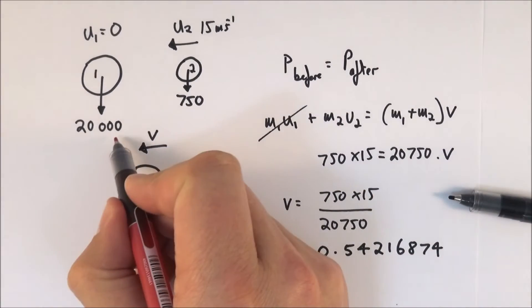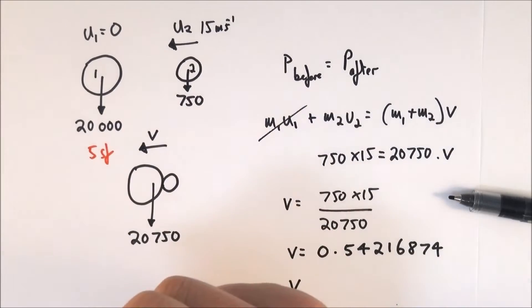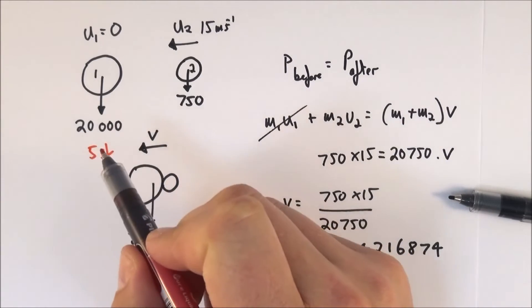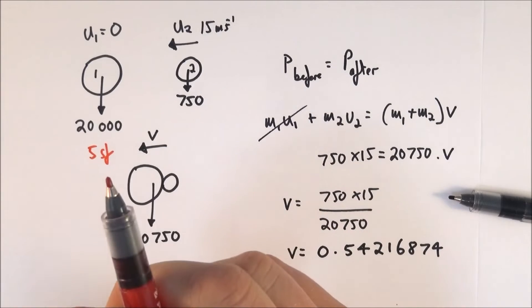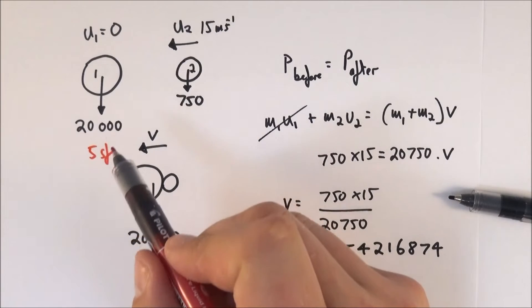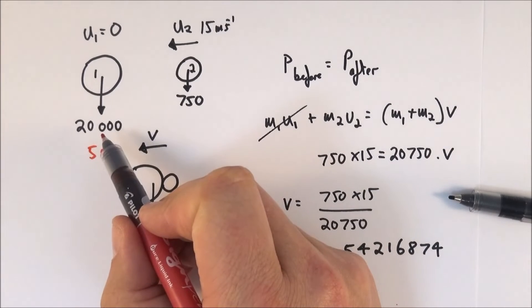Now first of all this mass here has been given to five significant figures. Why is that? Well because we have trailing zeros. If it had been given in standard form you might know if it's exactly 20,000. But effectively we're saying it's 20,000 kilograms to the nearest kilogram. So that's five significant figures.